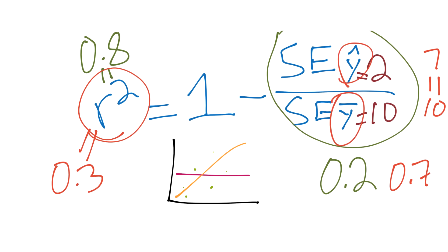Now that we know the calculation for R squared, we know what squared error is, we know how to calculate the y-hat line, and we know how to calculate the mean of the y's — which was part of our best fit line calculation — we can definitely calculate all of this in Python. That is what we're going to be doing in the next video. If you have questions, comments, or concerns, please feel free to leave them below. Thanks for watching, thanks for all the support and subscriptions, and until next time.